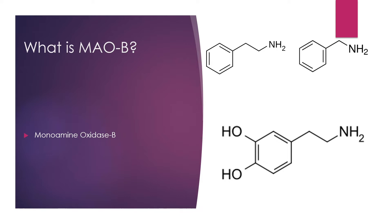Phenylethylamine, shown in the top left, acts as a central nervous stimulant on dopamine-releasing neurons to increase their ability to release dopamine. Dopamine, shown on the bottom, is the main neurotransmitter involved in several pathways such as motivation, reward, attention, and energy.